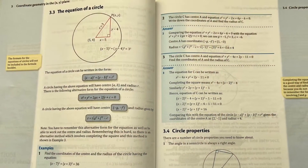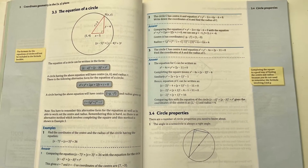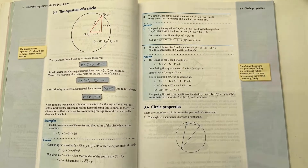Don't gloss over the section on circles either in the coordinate geometry section. You'll need those circle skills to be able to do the loci exercises in this chapter.